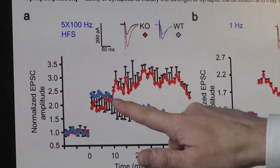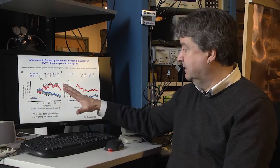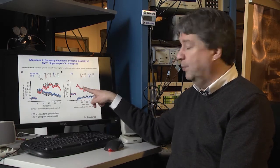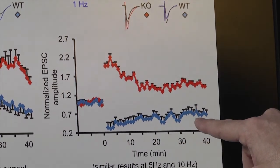What's really interesting is in the BAI1 knockout mice, we found that instead of long-term depression, we get long-term potentiation.